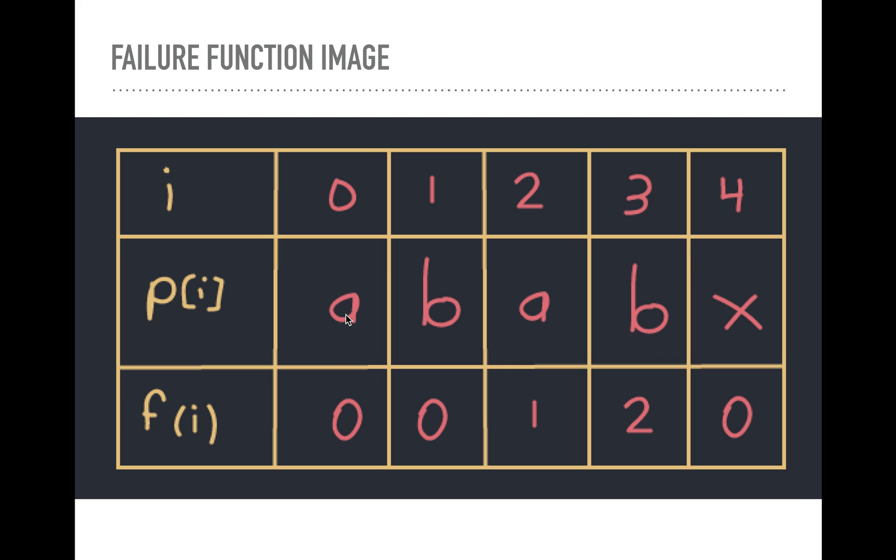So the first one's always zero, and then we look at b. Is this a prefix? No, because it starts with a. Is this a prefix? Yes. How far along did we get? One. And then now we're at b. Oh, look, this is two because it's a, b. And that is a, b is a prefix, and it's two characters long. Right? And then x, we ruined it.